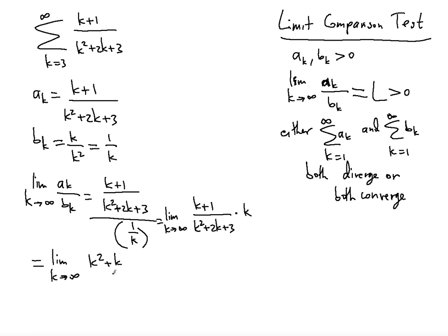We get k² + k divided by k² + 2k + 3. So as you can see this is a standard limit problem now. I'm going to divide by 1 over k squared. Basically what I'm trying to do is find the finite value L that is greater than zero, because if we do that then we can base our answers on whether both are divergent or convergent.